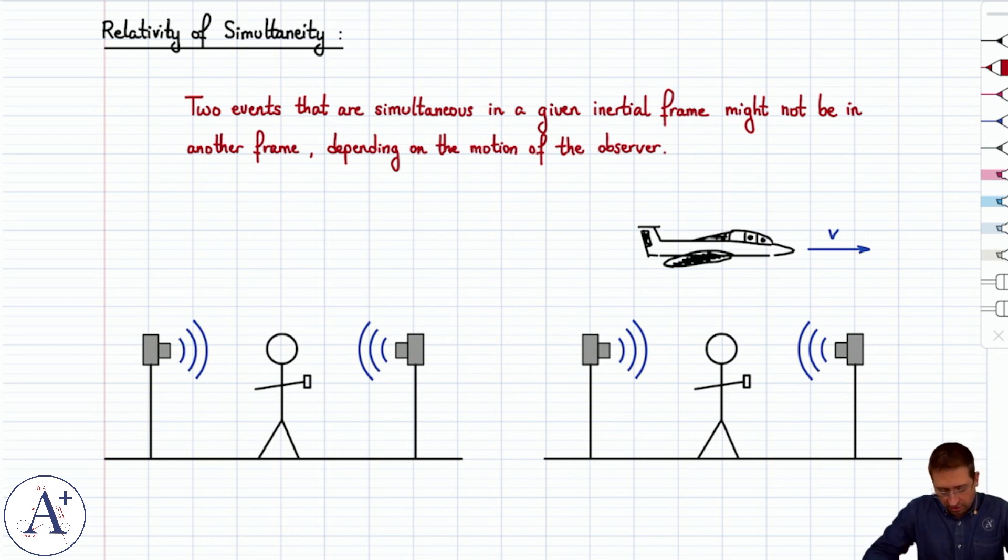So let's take a simple example here on the left, where this person, let's say you, stands in between two cameras, and you have a little remote control that will trigger both cameras, and they go off with the flash, and they go off at the same time. And you're exactly in the middle, and so to you, the events are simultaneous. The cameras flash at the same time in your frame.